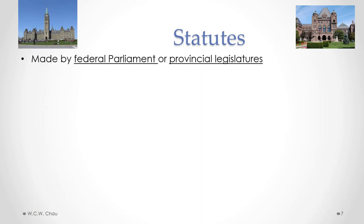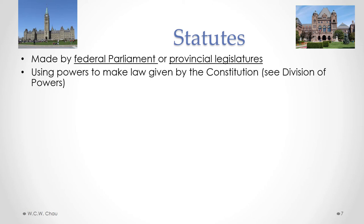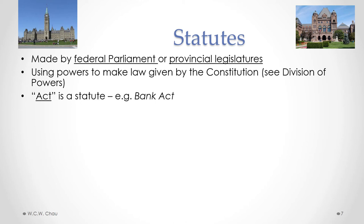Statutes are laws made by either the federal parliament in Ottawa or a provincial legislature. The provincial legislature for Ontario is the one located at Queen's Park in Toronto. Parliament and provincial legislatures exercise the law-making powers given to them under the constitution's division of powers. Any statute will have the word 'act' at the end — so anytime you see the word 'act' you know it's a statute. For example, the federal parliament created the statute governing banking in Canada called the Bank Act.